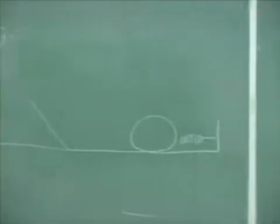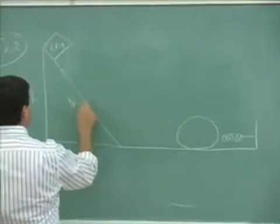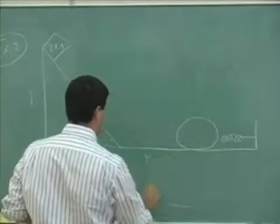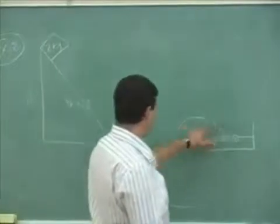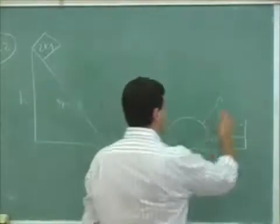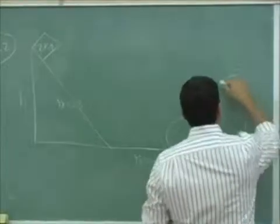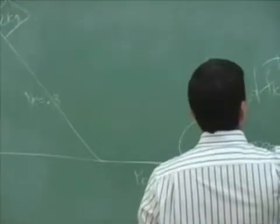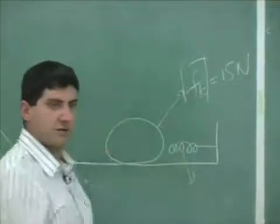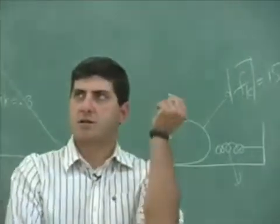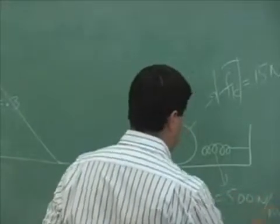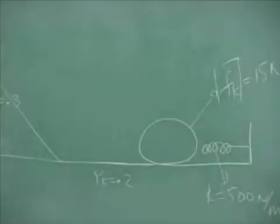Good problem here. We're gonna put here mu K is 0.3 along the incline. Along the flat road, mu K is 0.2. And then along the circular path, instead of giving you the mu K, I'm gonna give you the average fk. The magnitude of the average fk is 15 newtons. The spring constant of the spring, let's say this is a pretty hard spring, so let's make it 500 newtons per meter.